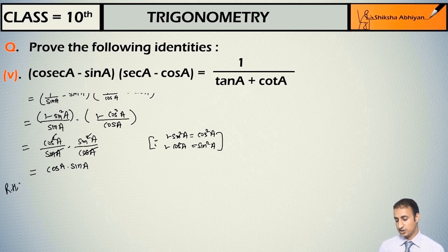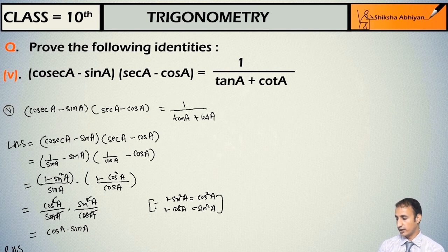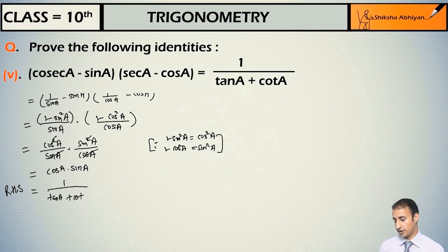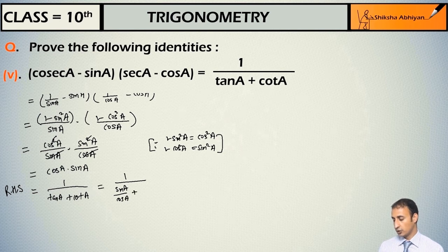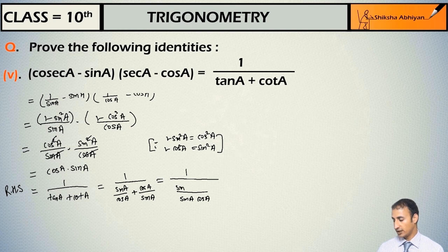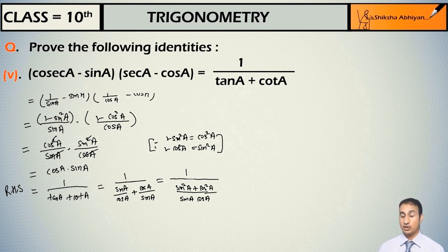So RHS — what is written on the right hand side is 1 upon (tan(a) + cot(a)). Now you know that tan(a) can be written as sin(a) upon cos(a), plus cot(a) can be written as cos(a) upon sin(a). Now take the LCM in the denominator — the LCM is sin(a)·cos(a), and the numerator becomes sin²(a) + cos²(a). You know that sin²(a) + cos²(a) = 1.